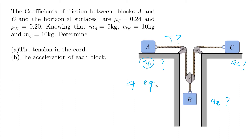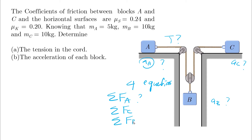Equation 1 is ΣF for block A; equation 2 is ΣF for block C; equation 3 is ΣF for block B; and equation 4 comes from the cable length constraint, which gives the kinematic relationship between the accelerations of A, C, and B.